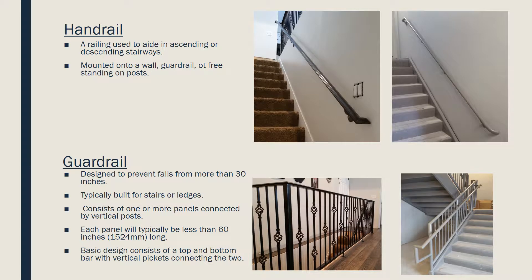A handrail is the part of a railing system that is meant to be grabbed to aid in ascending or descending stairways, usually mounted onto a wall or guardrail, but can also be freestanding on posts. Two different handrails are shown in the pictures on the top; both are mounted on walls. The left is in a house, and the right is in a commercial stair tower.